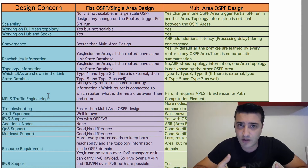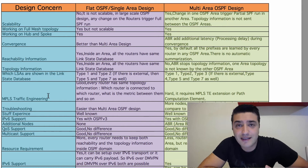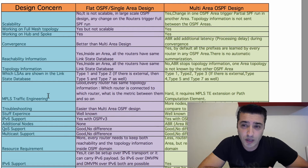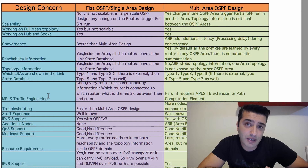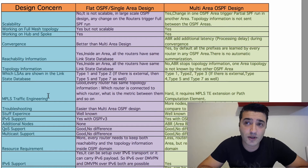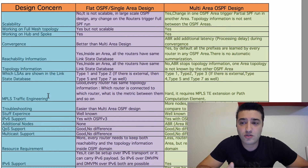Multi-area OSPF design is much more scalable — that's the reason you do it. For full mesh topology, scalability is also a concern in single-area design. OSPF and IS-IS as link-state protocols support mesh groups, which is an advantage over EIGRP, but multi-area design brings additional scalability to full mesh topologies as well.